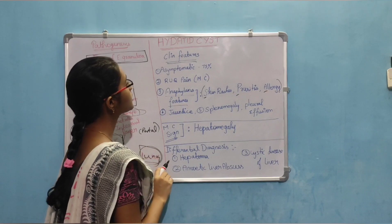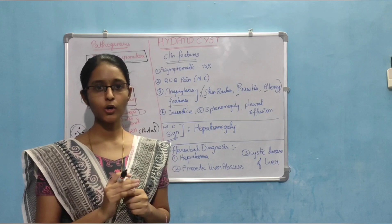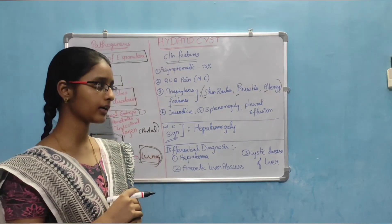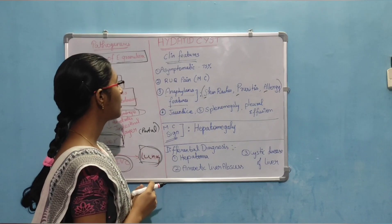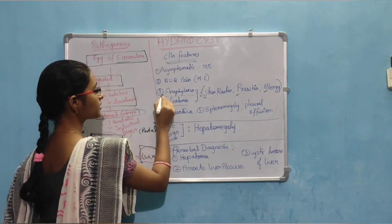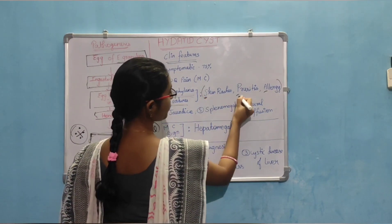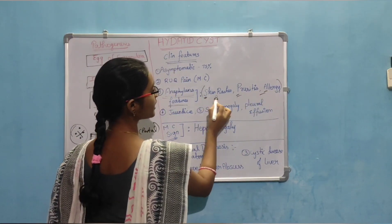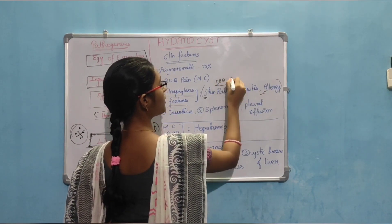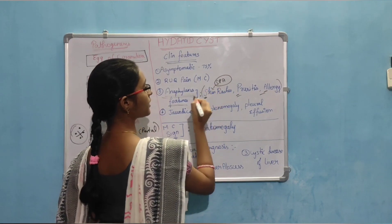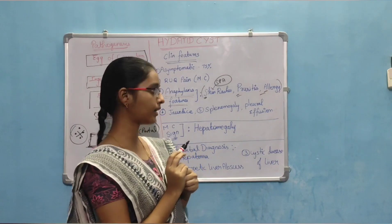Clinical features: 75% will be asymptomatic and most common sign is right upper quadrant pain as liver involved, and anaphylaxis features. So anaphylaxis features we can remember as SPA: skin rashes, pruritus, allergy. So anaphylaxis features will be skin rashes, pruritus, allergy.